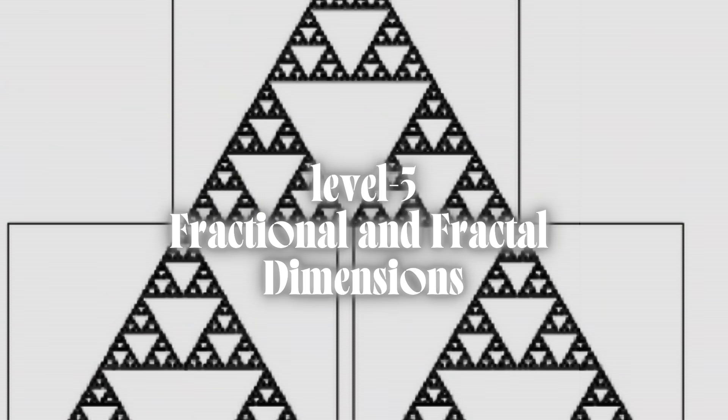Level 5: Fractional and fractal dimensions. You've discovered that dimension doesn't even have to be an integer. In fact, fractals like the Koch snowflake have fractional dimensions — the Hausdorff dimension — and shapes can demand more than one coordinate but less than two. This is because the fractal dimension of something can be measured by how much the detail increases when you zoom in.